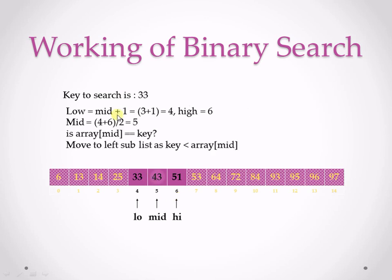Now I need to find the mid again. Low is 4, high is 6, so mid is 4 plus 6 divided by 2 equals 5. I check: is the element at mid equal to my key 33? The element at mid is 43. Is 43 equal to 33? No. My key 33 is less than 43, so I need to move to the left sublist. I update my high — new high is mid minus 1, which is 5 minus 1 equals 4.